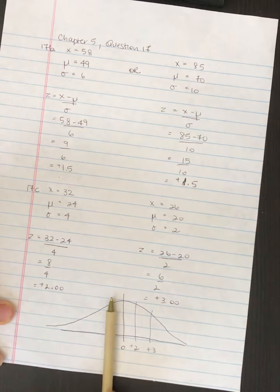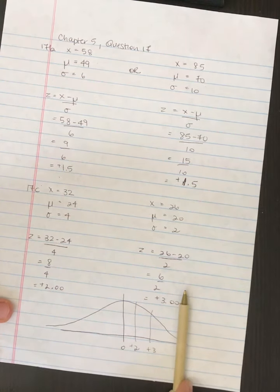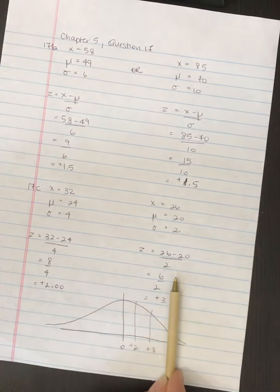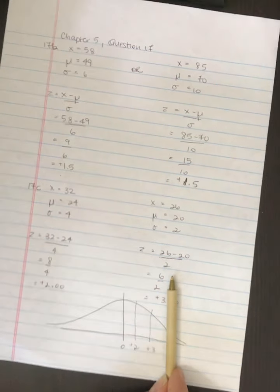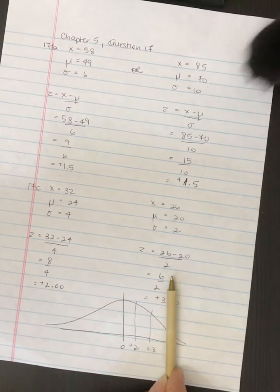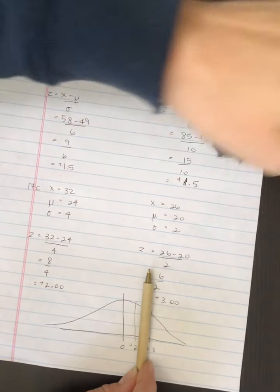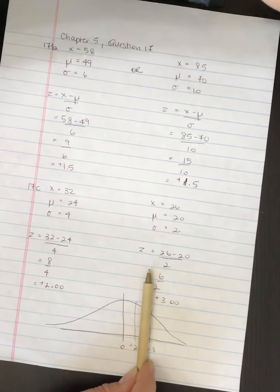So because we're on the right-hand side of the curve, a score of plus 3 is a better score than, and here comes my cat, sorry. A score of plus 3 is better than a score of plus 2.